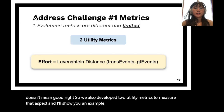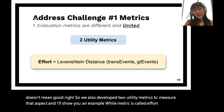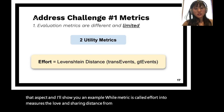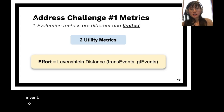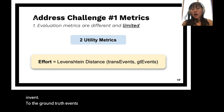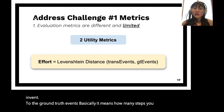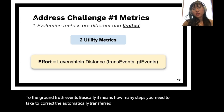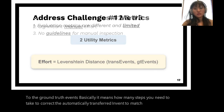One utility metric is called effort. It measures the Levenshtein distance from the transferred event to the ground truth event — basically, how many steps you need to take to correct the automatically transferred event to match the ground truth event.